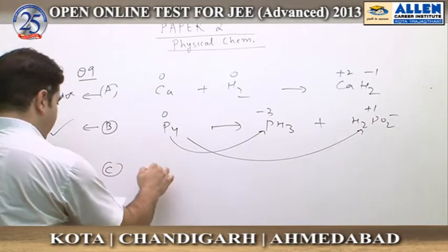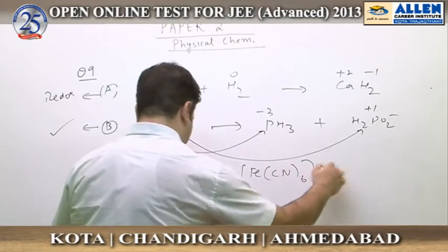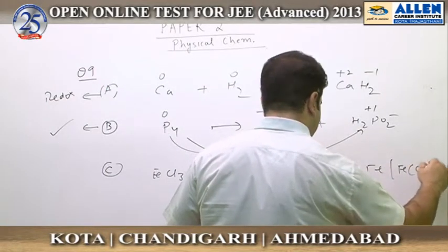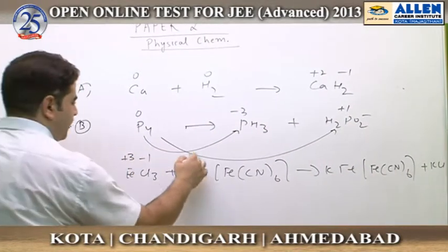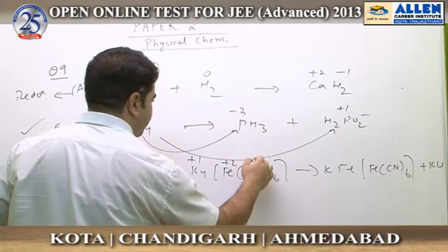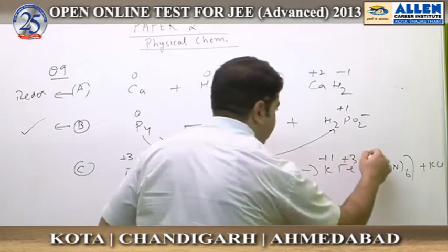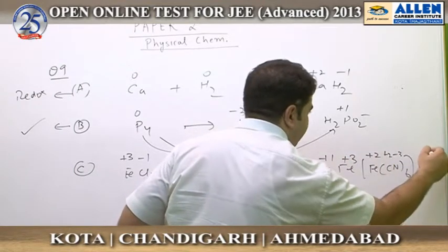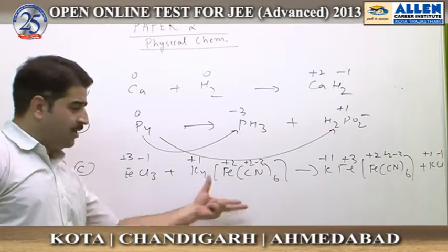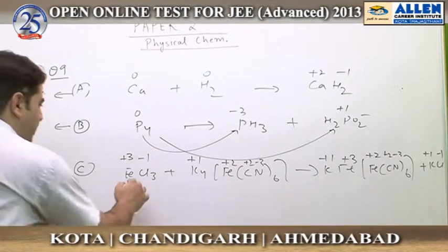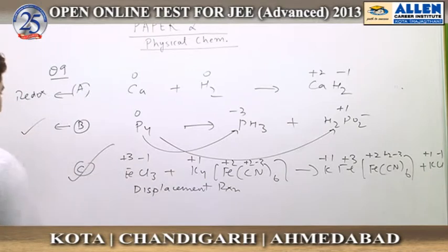In reaction C, FeCl3 reacting with potassium ferrocyanide forms K[Fe·Fe(CN)6] along with KCl. Comparing oxidation numbers: Fe is +3 on the reactant side and +2/+2 on the product side — but none of the atoms actually changes its oxidation number, since the oxidation numbers remain constant. So it is a displacement reaction, not a redox reaction.